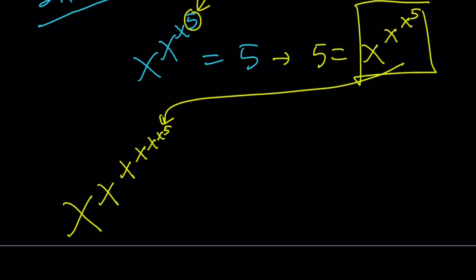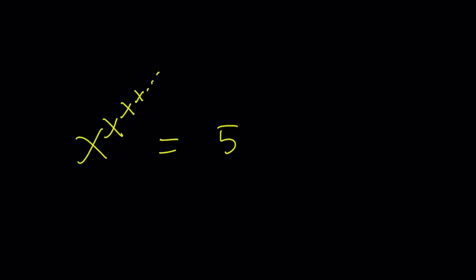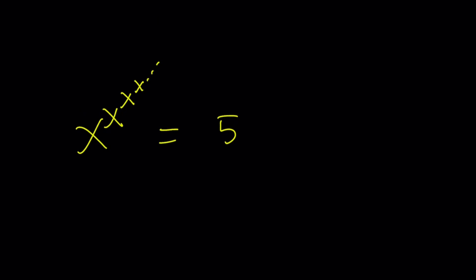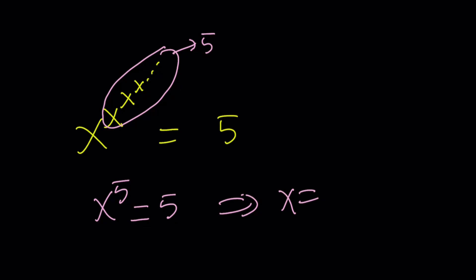So instead of the 5, we write x to the power x to the power x to the power 5. You see that tower getting taller — but we get the same answer. You can keep doing it: replace the 5 with x to the power x to the power x to the power 5, and eventually replace the 5 with the whole infinite tower — x to the power x to the power x to the power x, going on forever, which equals 5. If x to the power x to the power x... all the way to infinity equals 5, then this gives us x to the 5th power equals 5, and therefore x equals the 5th root of 5.